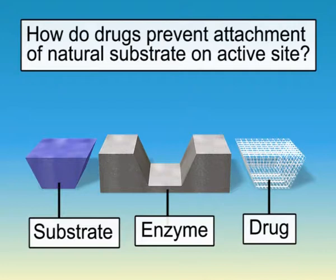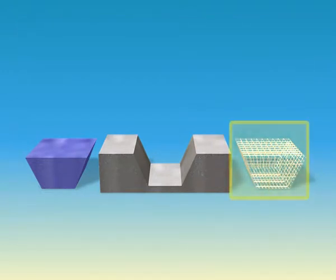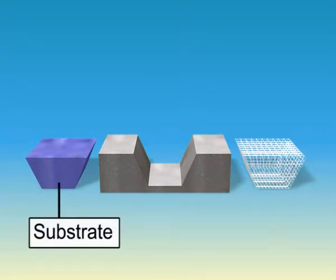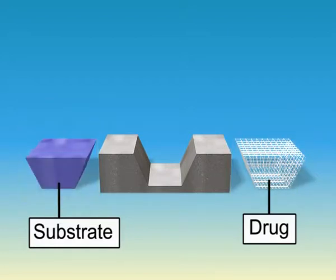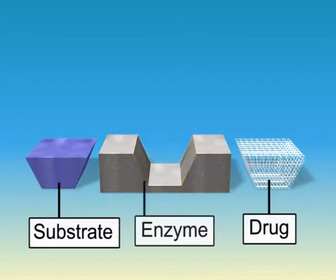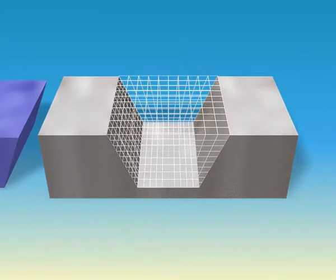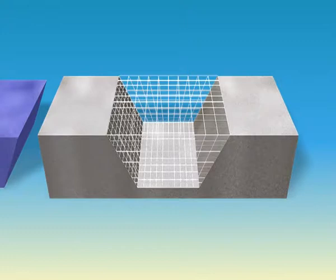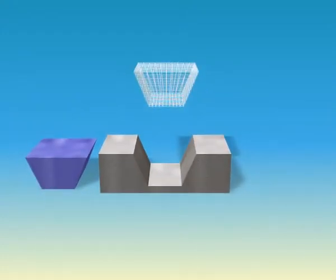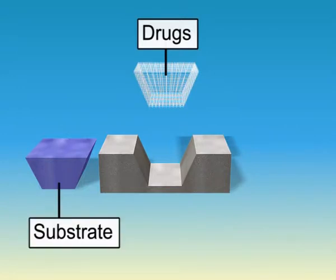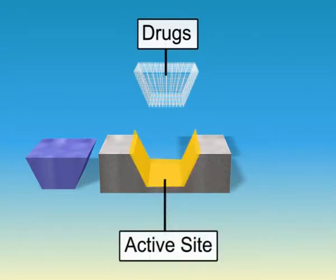How do drugs prevent attachment of natural substrate on active site? Drugs inhibit the attachment of natural substrate on active site of enzymes in two different ways. There is a competition between the chemical constituent of the drug and the natural substrate to attack the active sites on the enzymes. Drugs which compete with natural substrate for their attachment on the active site of enzymes are called competitive inhibitors. This means drugs inhibit or block the attack of the substrate on these active sites.